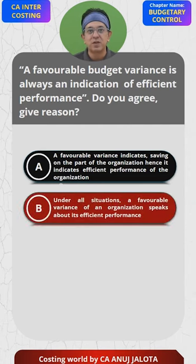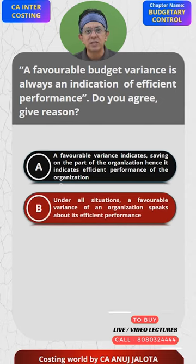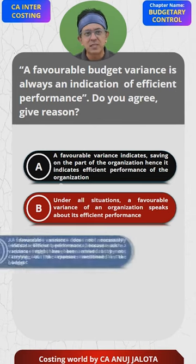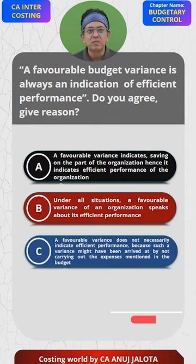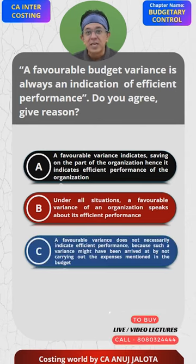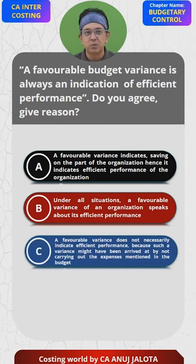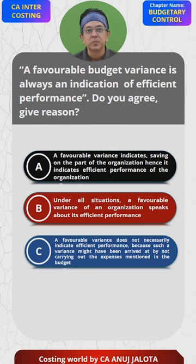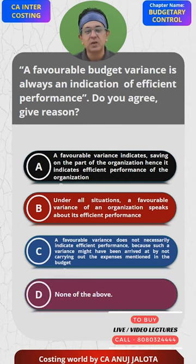Option B: Under all the situations, a favorable variance of the organization speaks about its efficient performance. Option C: A favorable variance does not necessarily indicate efficient performance because such a variance might have been arrived at by not carrying out the expenses mentioned in the budget. Option D: None of the above.